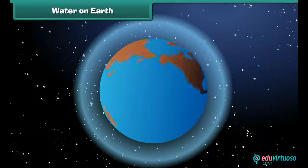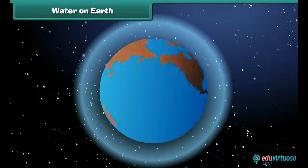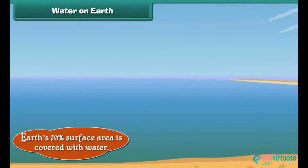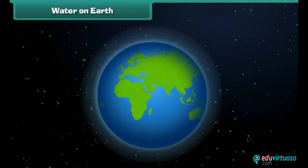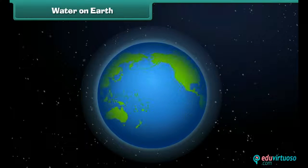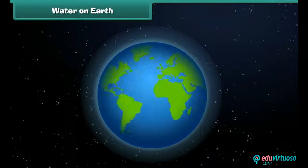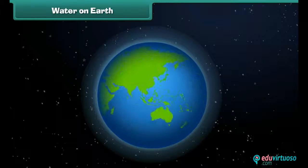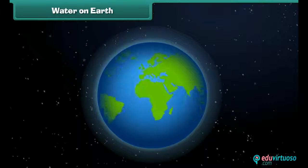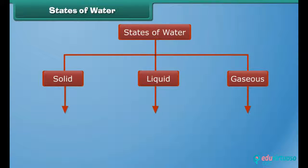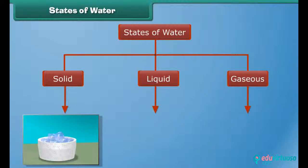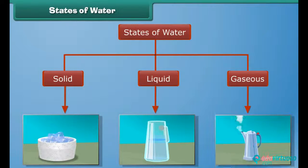What is the most abundant substance present on the earth? In fact, our earth's 70% surface area is covered with water. Earth is also called a blue planet because when seen from space, it appears blue due to water. Water exists in three states: solid, liquid, and gaseous.